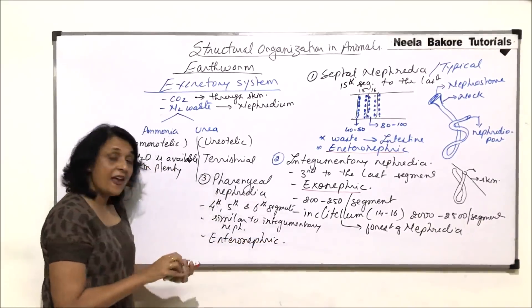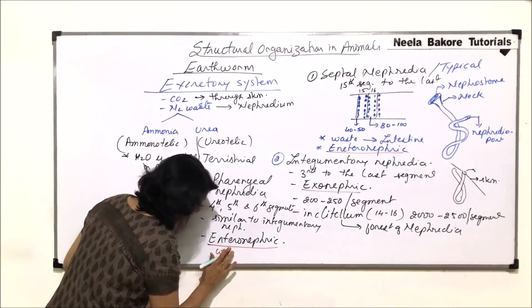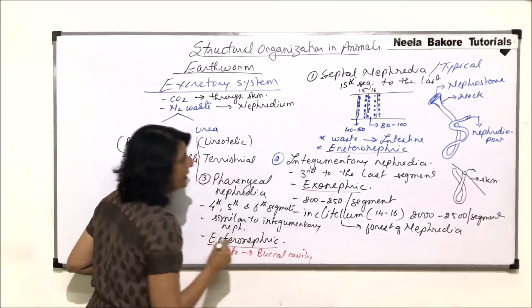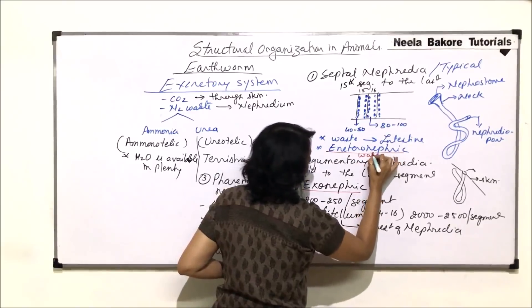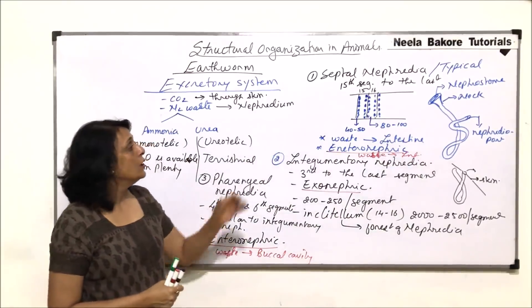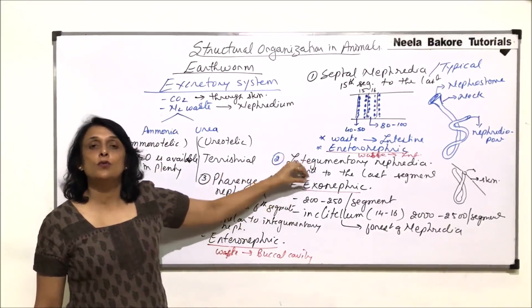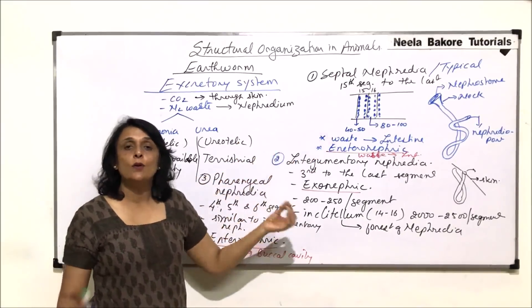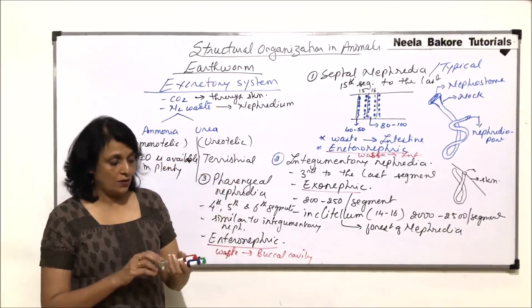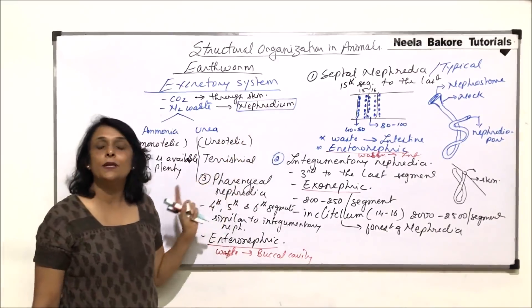Pharyngeal nephridia dump the waste into the buccal cavity, whereas septal nephridia dump waste into the intestine. So out of three types of nephridia, two are enteronephric and one is exonephric. The integumentary nephridia throw waste outside the body, while the other two dump it into the alimentary canal from where it is eventually taken out.